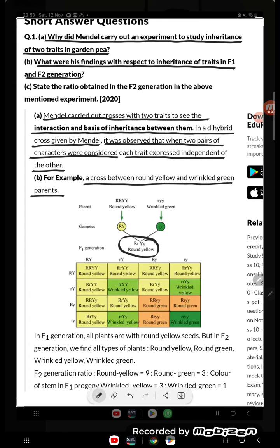Round green 3, wrinkled yellow 3, and wrinkled green is 1. So these are the types of answers. State the ratio obtained in F2 generation in the above mentioned experiment.